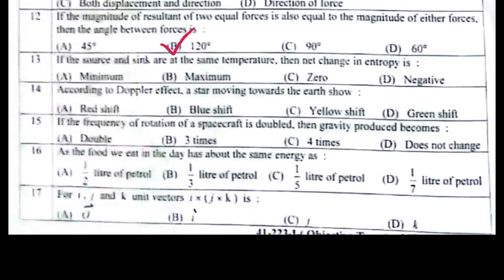If the source and sink are at the same temperature, the net change in entropy is zero. According to Doppler effect, a star moving toward the earth shows blue shift.